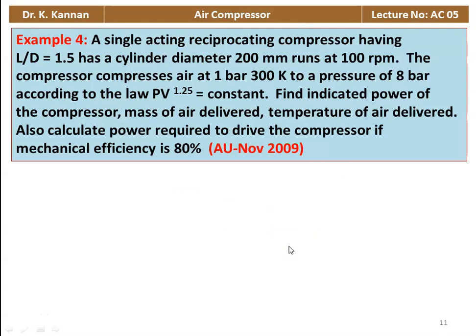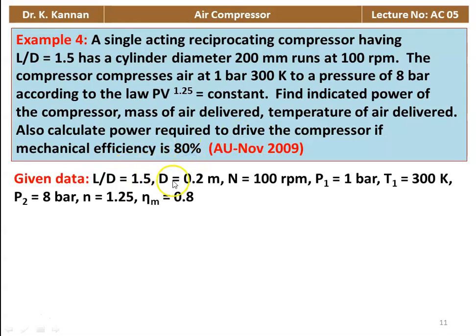Example number 4 from November 2009 question paper. A single acting reciprocating compressor having L/D ratio 1.5 has cylinder diameter 200 mm, runs at 100 RPM. The compressor compresses air at 1 bar, 300 K to 8 bar according to PV^1.25 = constant. Find the indicated power, mass of air delivered, temperature of air delivered, and power to drive the compressor if mechanical efficiency is 80%.